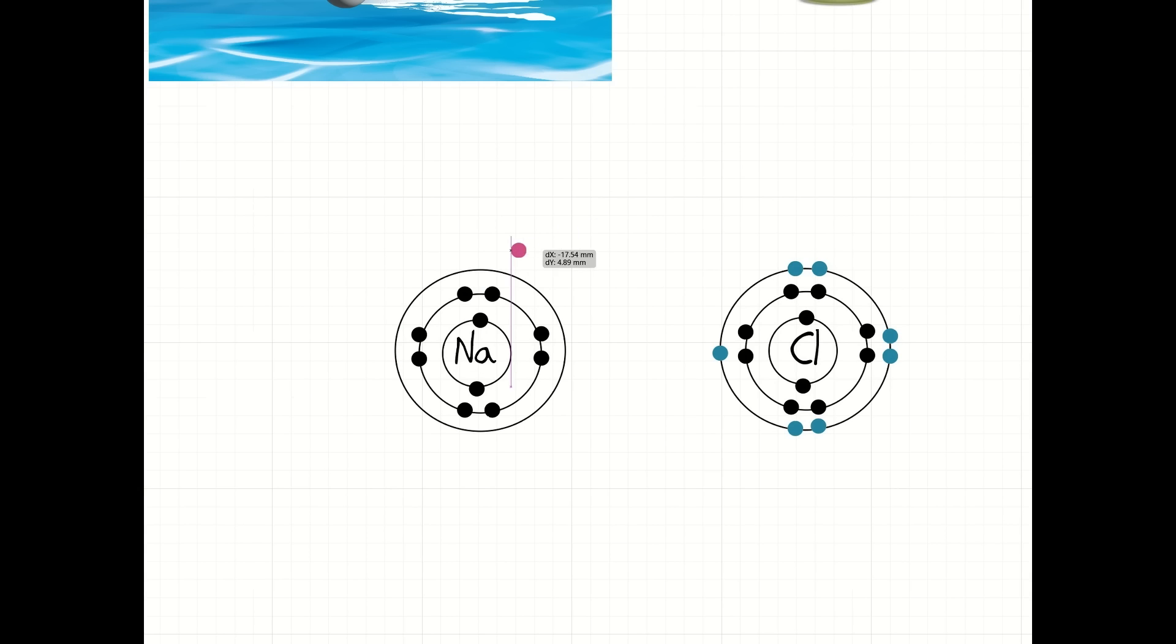Non-metals, on the other hand, they gain electrons to get a full outer shell. And chlorine, for example, here, needs to gain one electron. So, sodium reacts with chlorine by giving it its outer shell electron.